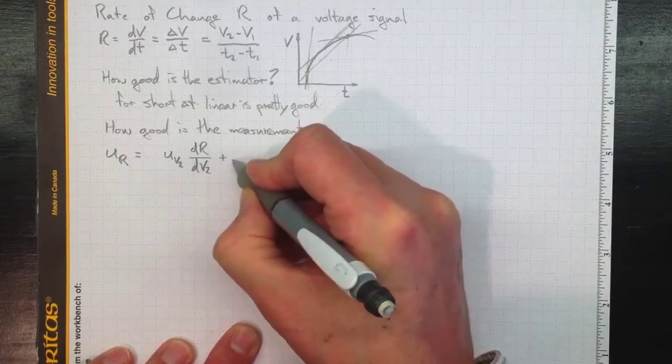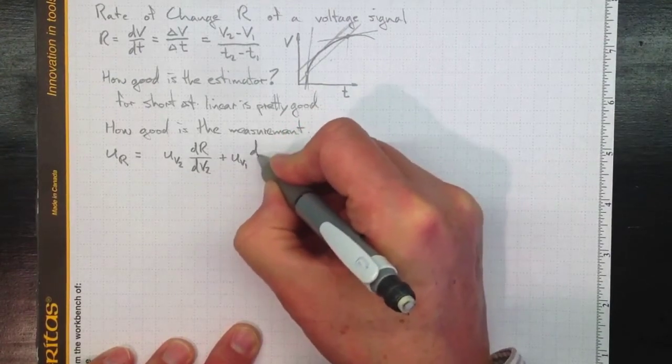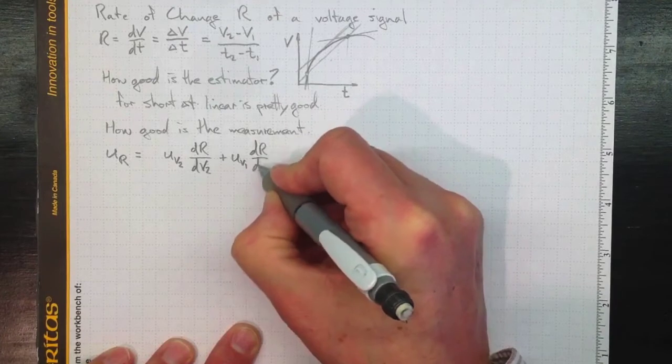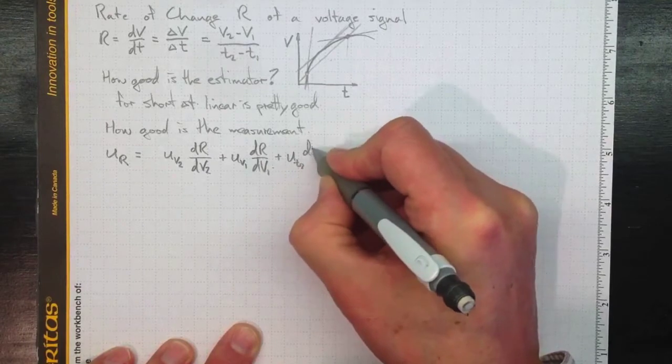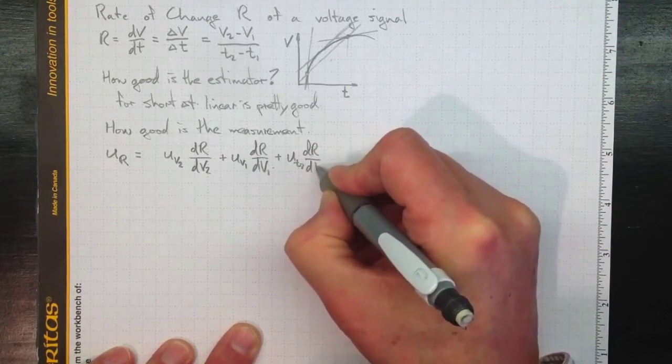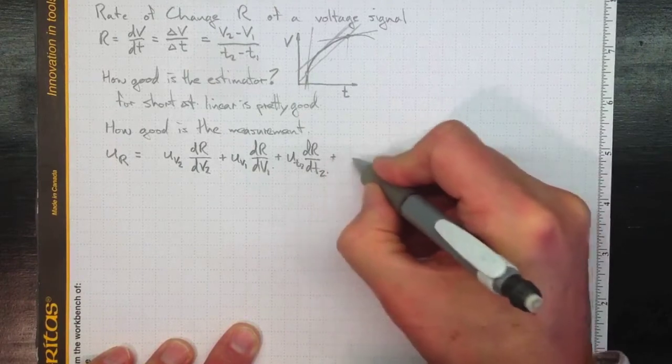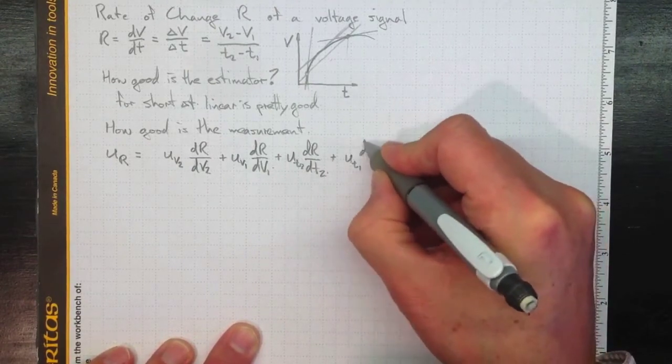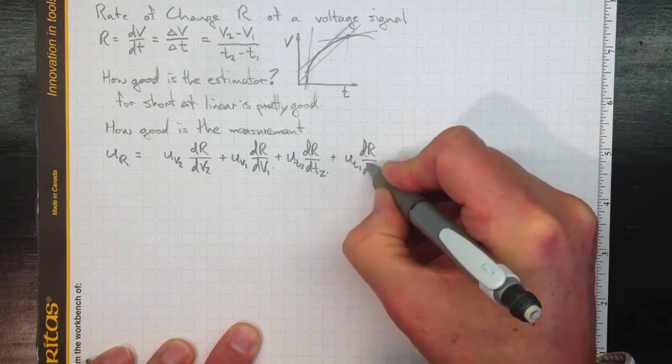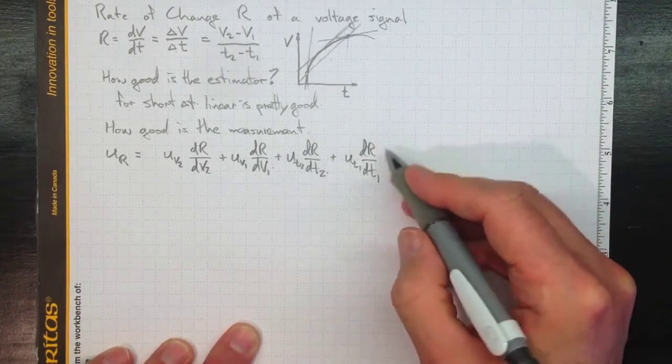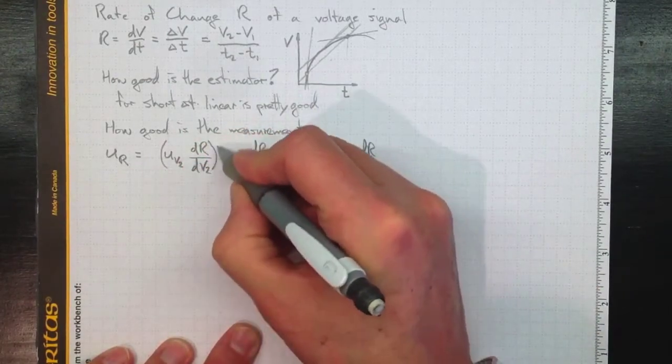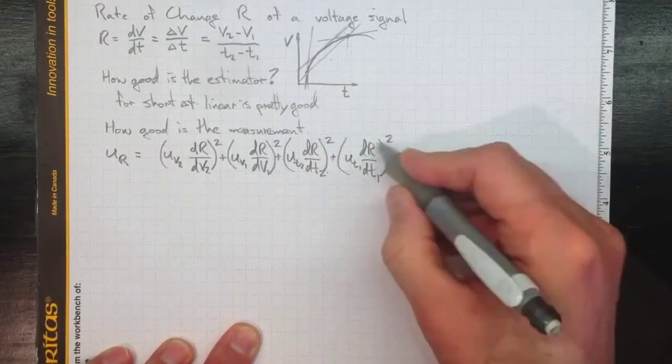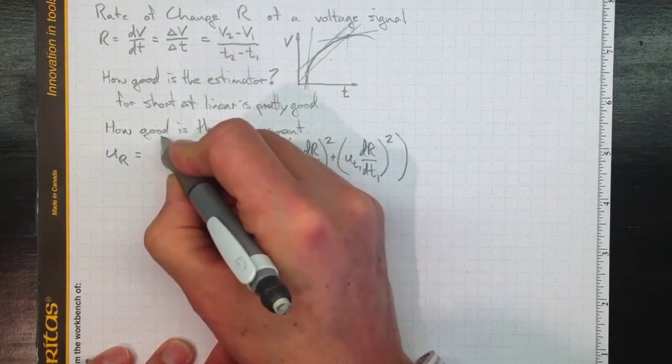Likewise, uncertainty in V1, DR/DV1, uncertainty in T2, DR/DT2, and uncertainty in T1, DR/DT1. Now again, because we're combining multiple probability distributions, we take the square of each of these contributions, sum them up, and then we take the square root.